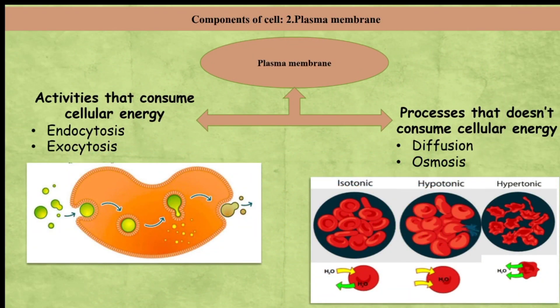Let's see the activities that consume cellular energy. Two terms come into the picture: first is endocytosis and the second one is exocytosis. Endocytosis means to engulf food and other substances from the outer environment, and exocytosis is a process to excrete waste material out of the cell. Diffusion and osmosis are the two processes that don't consume cellular energy.